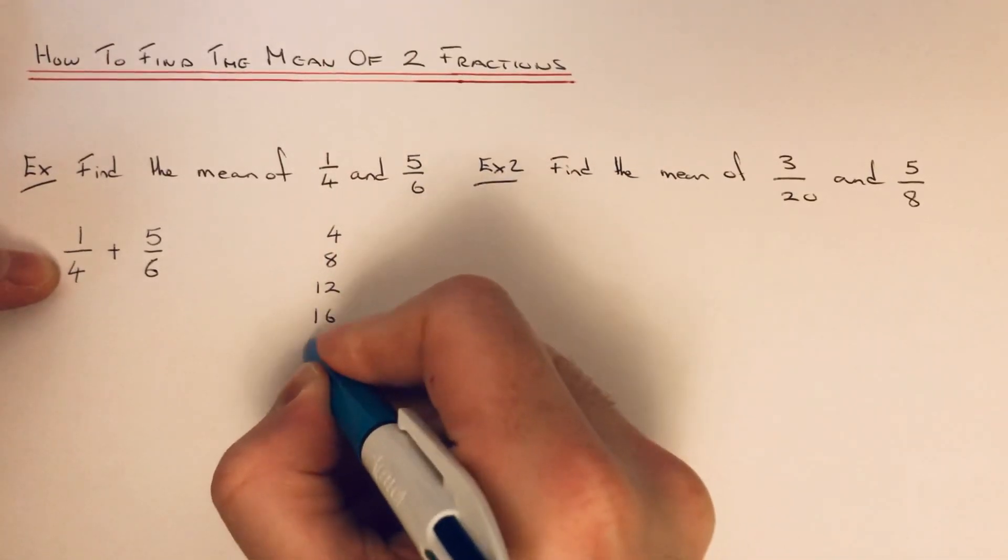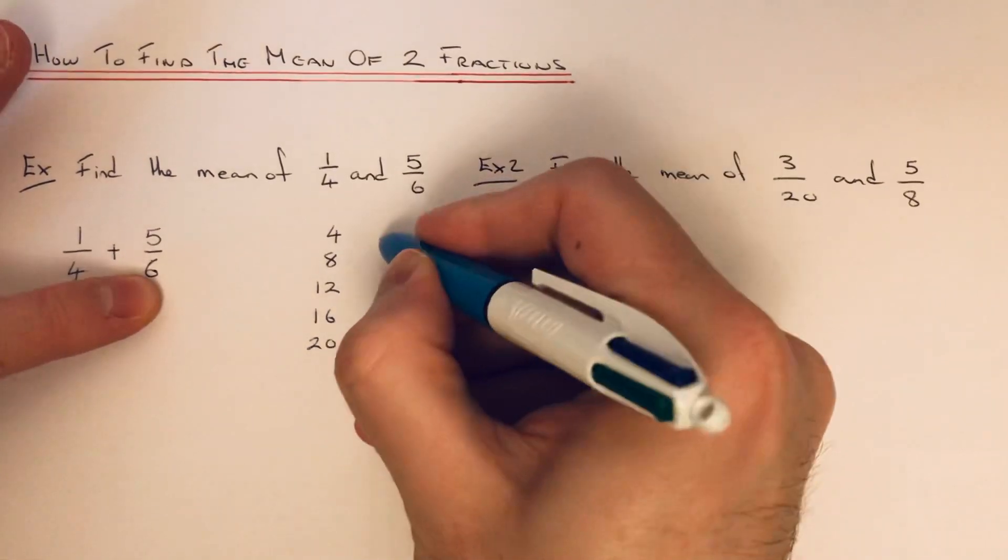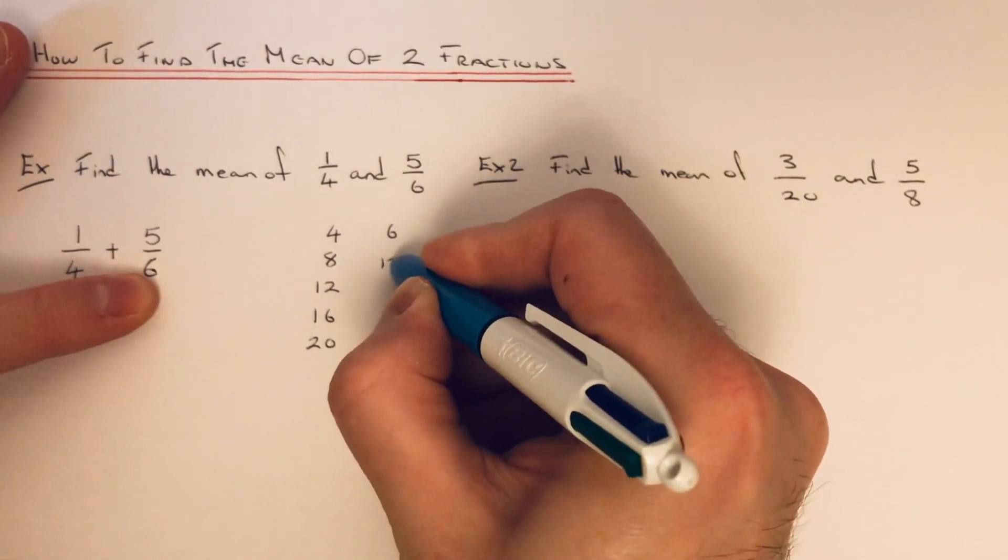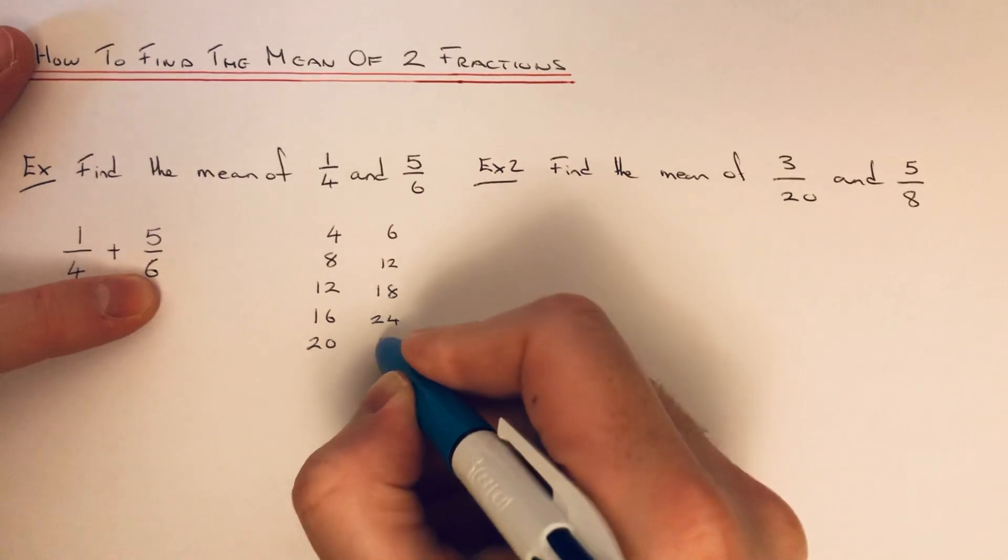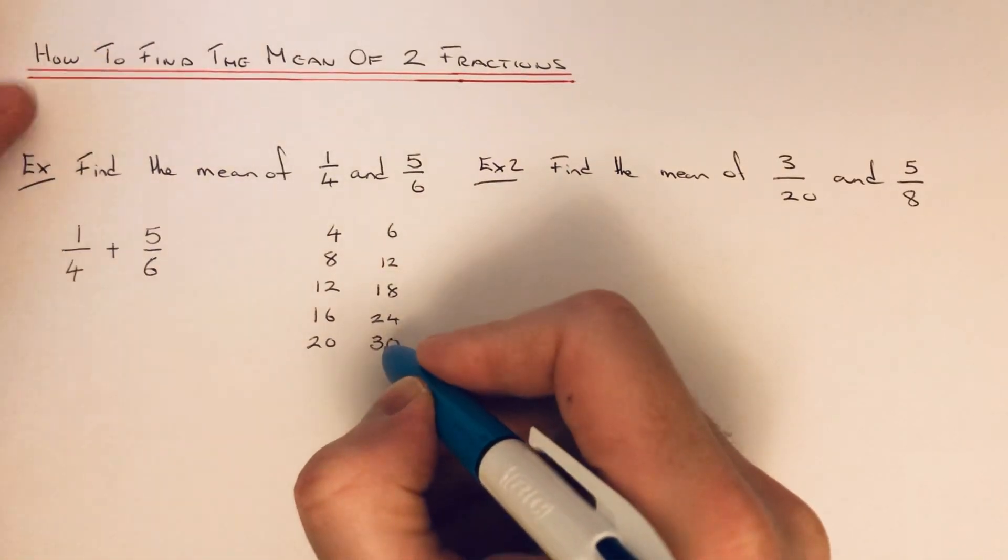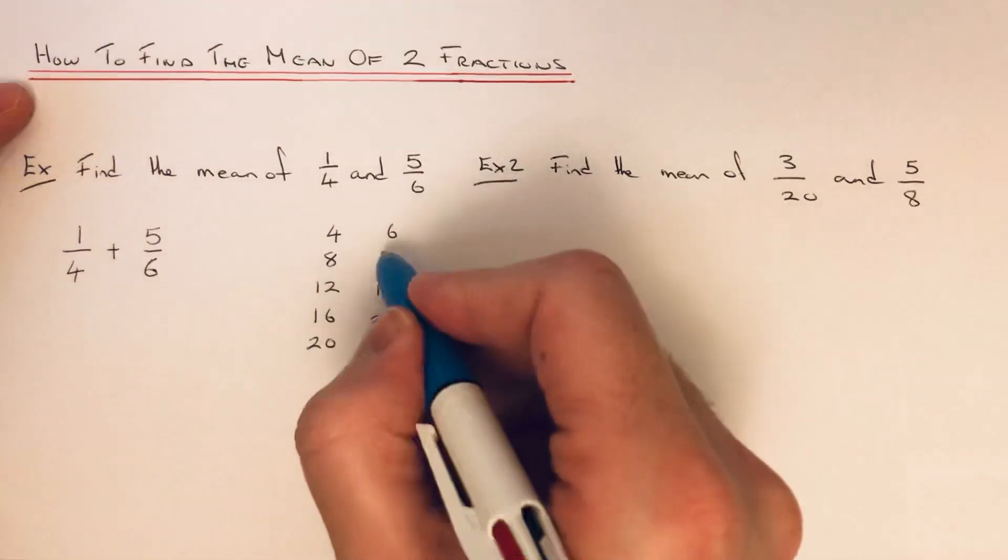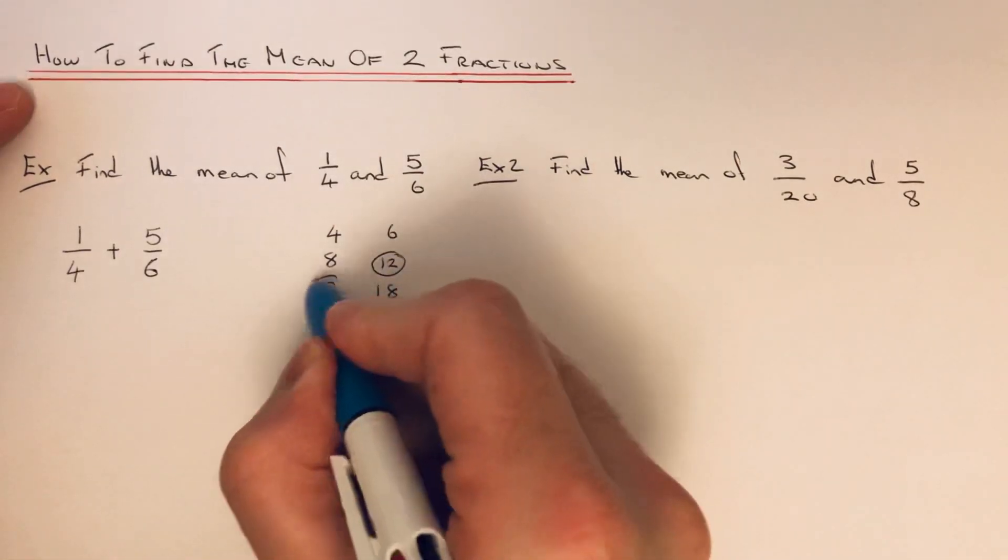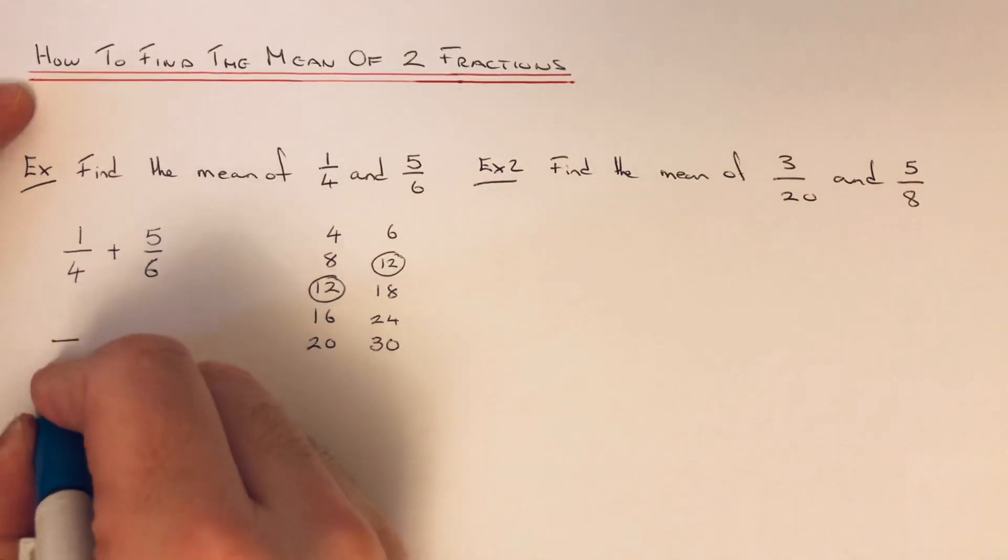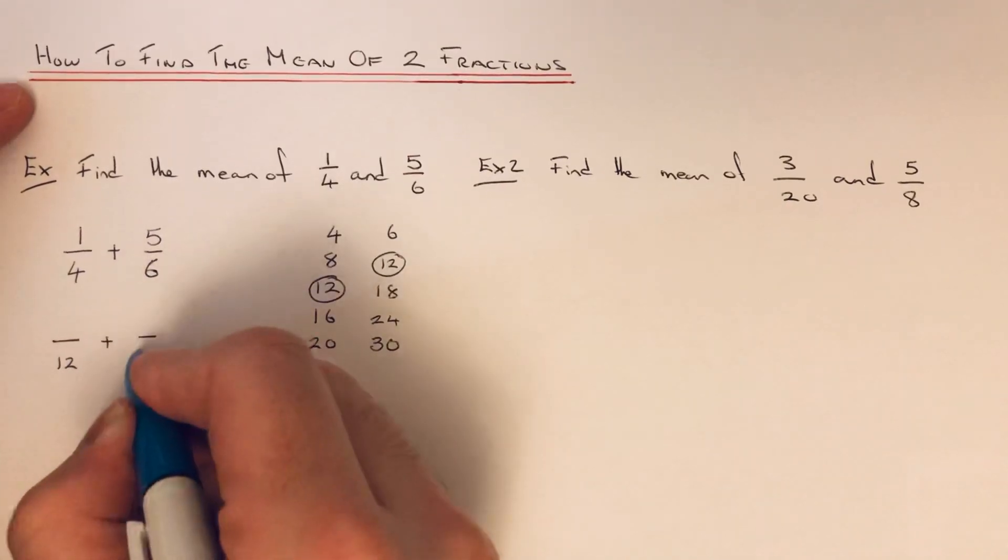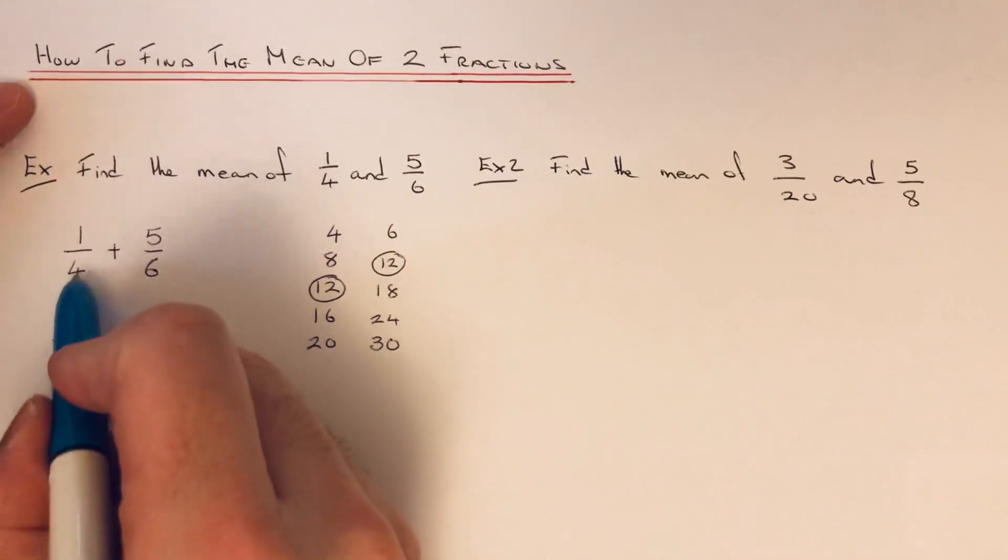If you write down our multiples of 4, we've got 4, 8, 12, 16, 20. Write down our multiples of 6, we've got 6, 12, 18, 24, and 30. So the number which goes into both is 12, so that will be our common denominator.